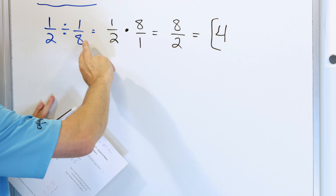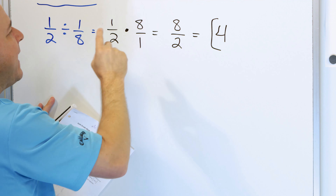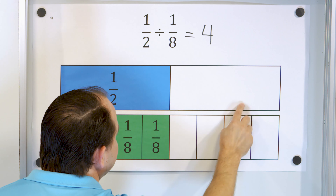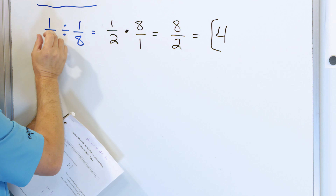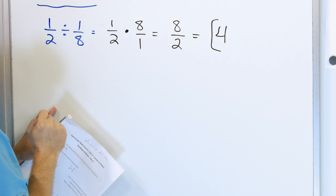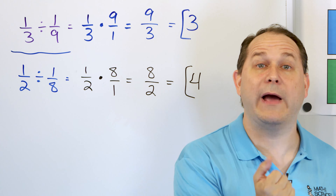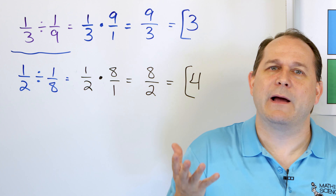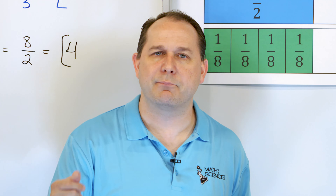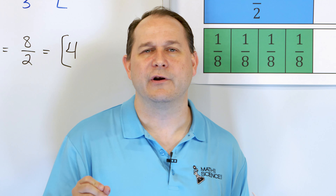Why does flip and multiply make sense here? When I flip 1/8, it's telling me that one eighth will fit eight whole times into a whole. If I were dividing one divided by this, it would go one, two, three, four, five, six, seven, eight times. But I'm taking one half divided by that. So whatever I get when it goes eight times into a whole, I need to cut it in half — I multiply by a half and that tells me it goes four whole times. Flipping tells you how many times that fraction fits into a whole; multiplying accounts for whatever you actually had to start with. Now let's solve a few more problems with no pictures — just mechanics.